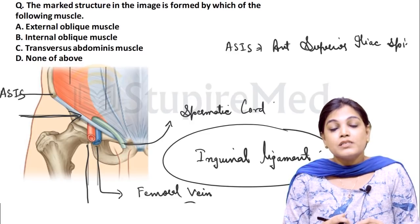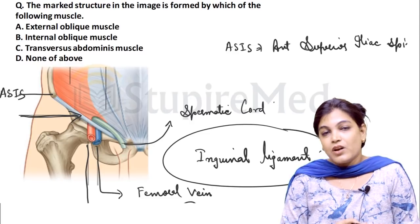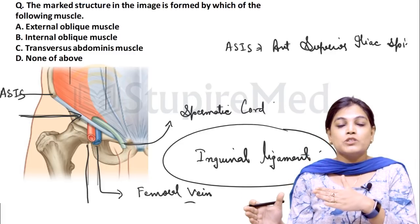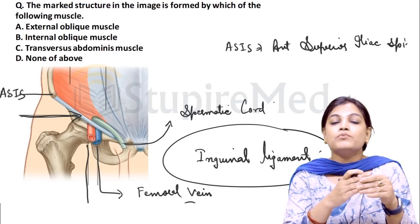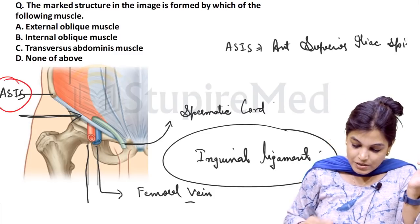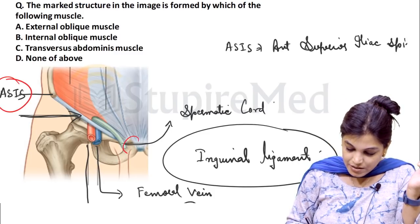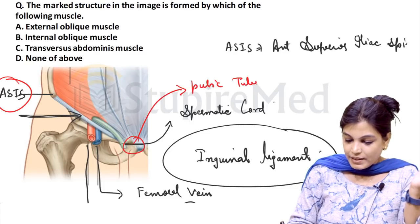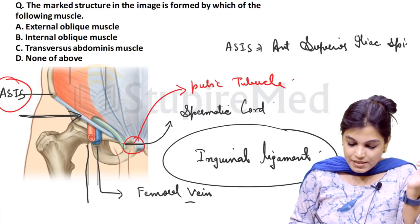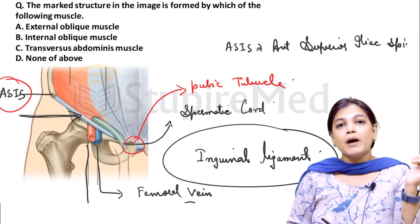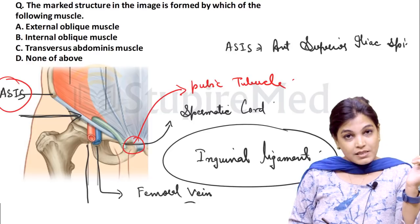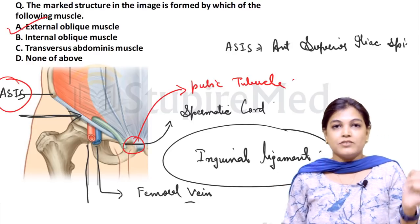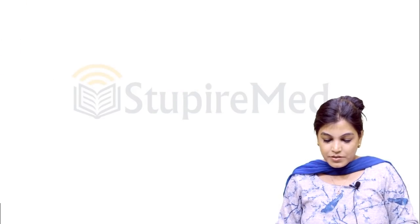Coming to the question — the marked structure connects the anterior superior iliac spine to the pubic tubercle, which is the inguinal ligament. As discussed, the inguinal ligament is formed from the free margin of the external oblique muscle, so option A is the correct answer.